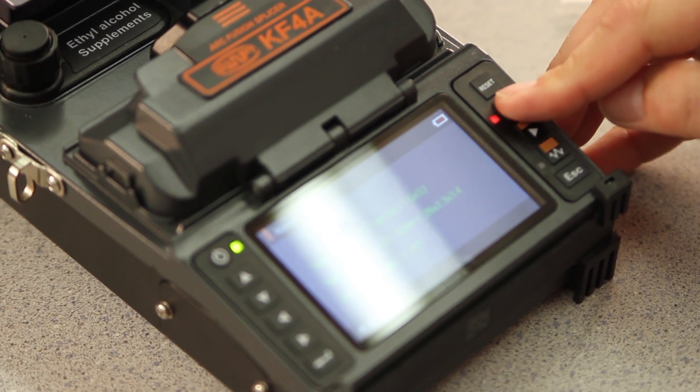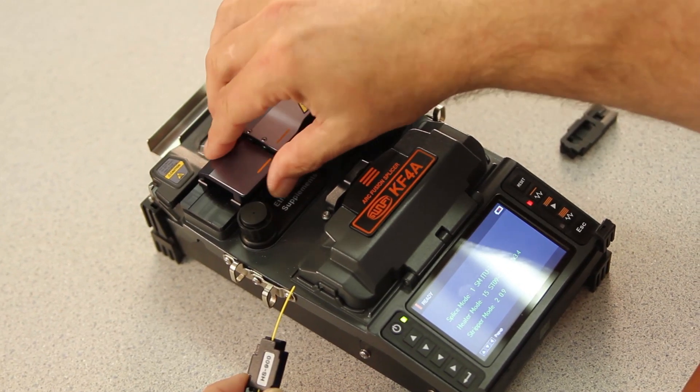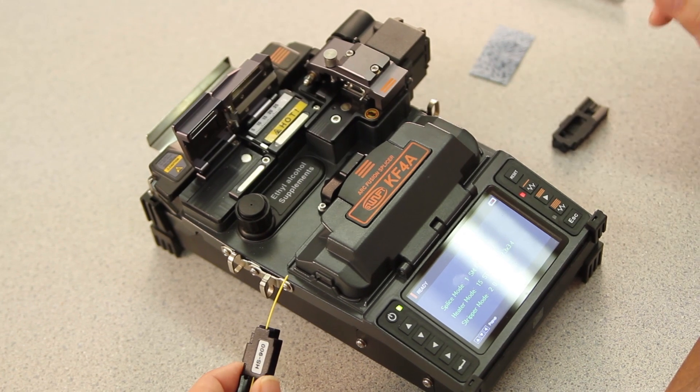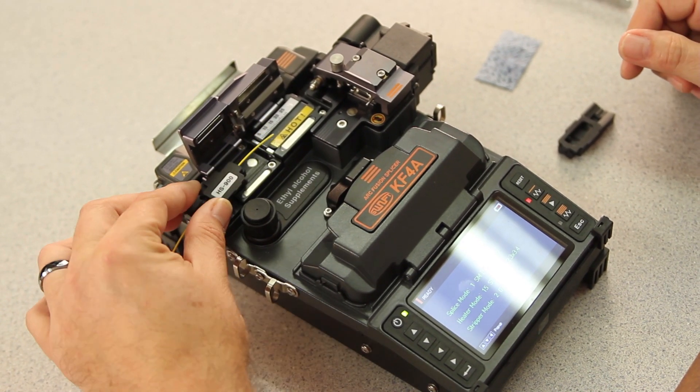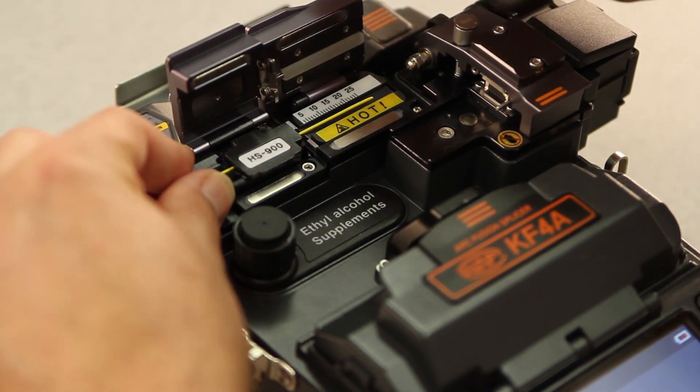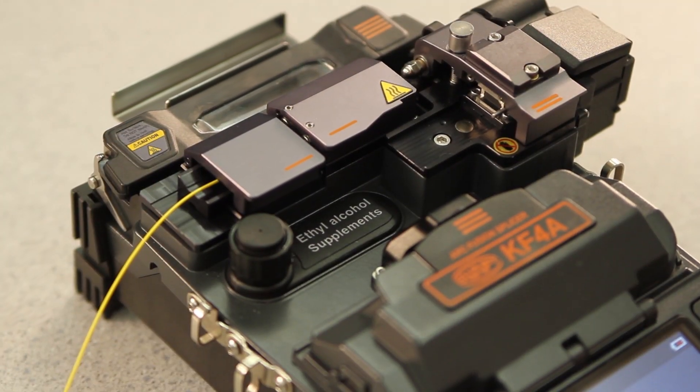Turn your stripper on and open your left, then right stripper doors. Place your holder, pushing it all the way forward, and closing both of your doors.